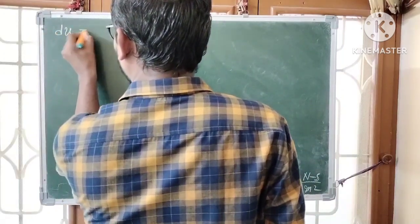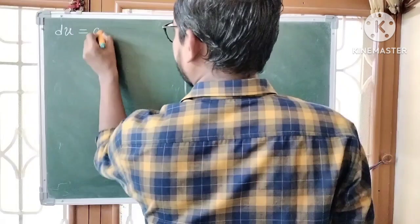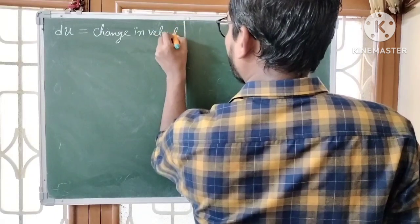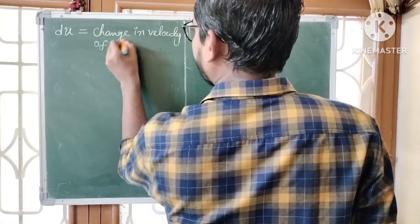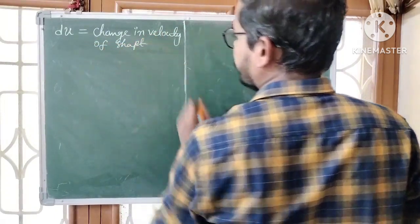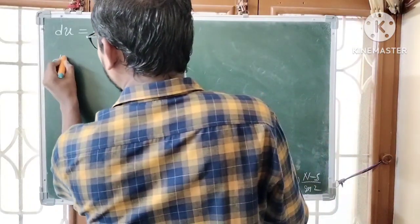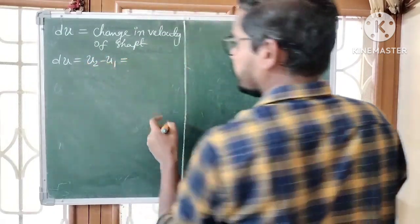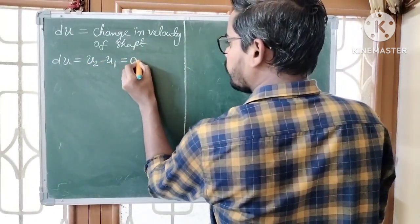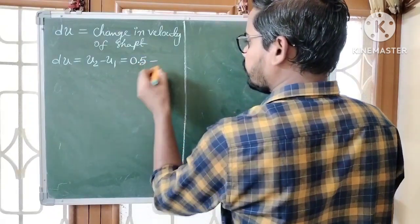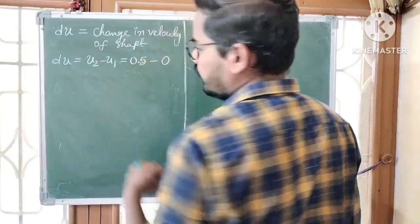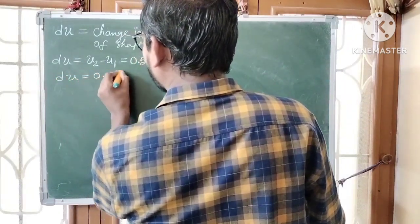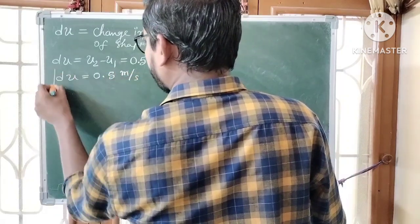du represents the change in velocity of the shaft. du = final velocity − initial velocity = 0.5 − 0 = 0.5 m/s, since no initial velocity is mentioned.